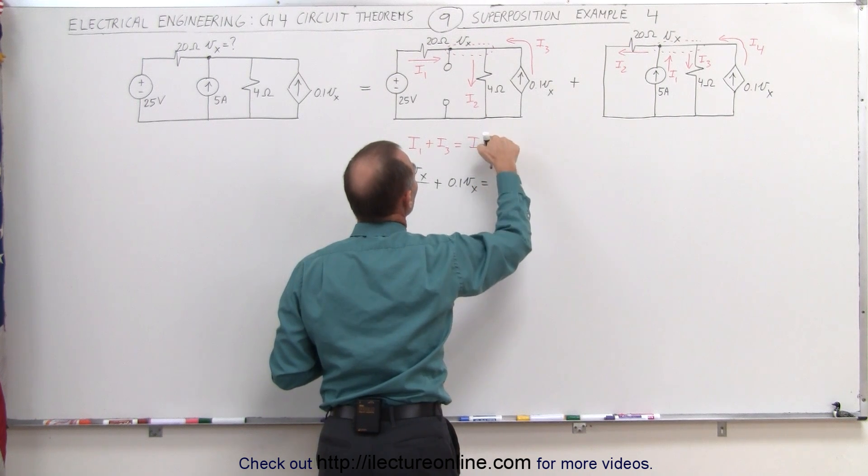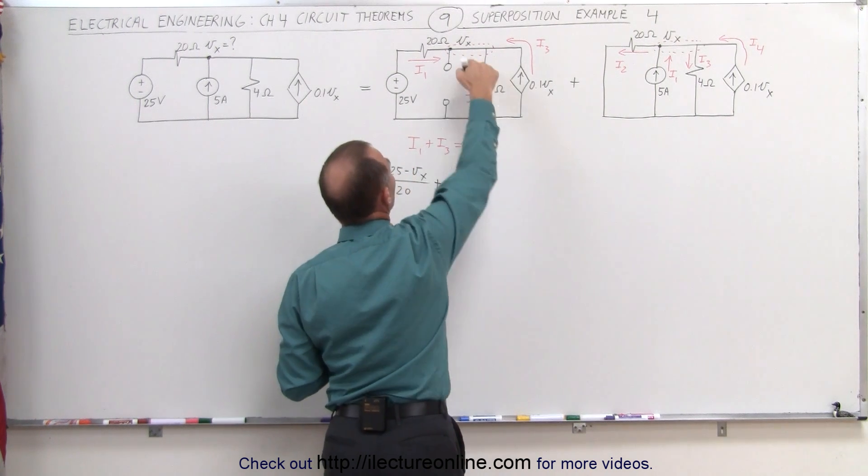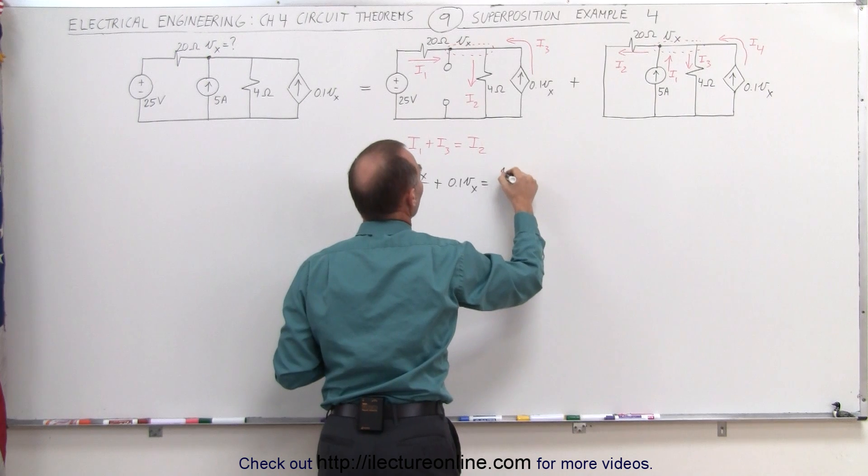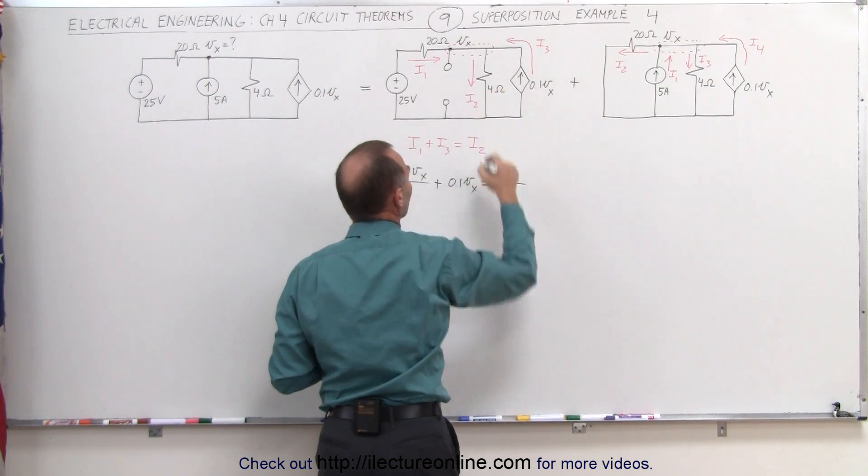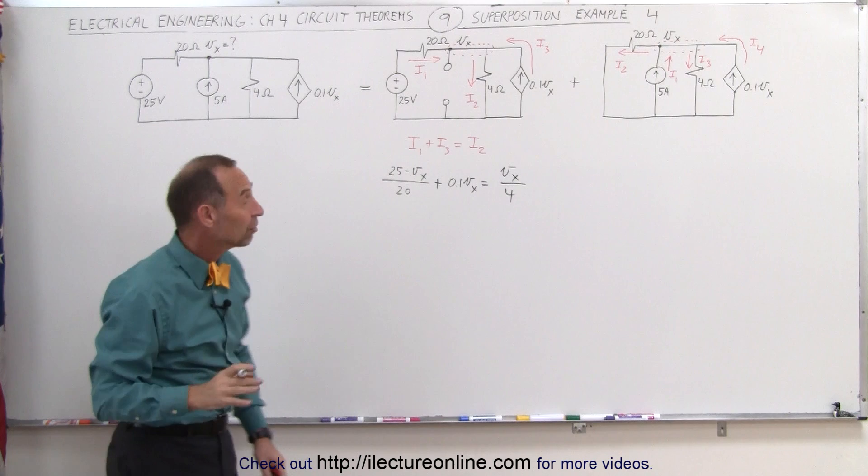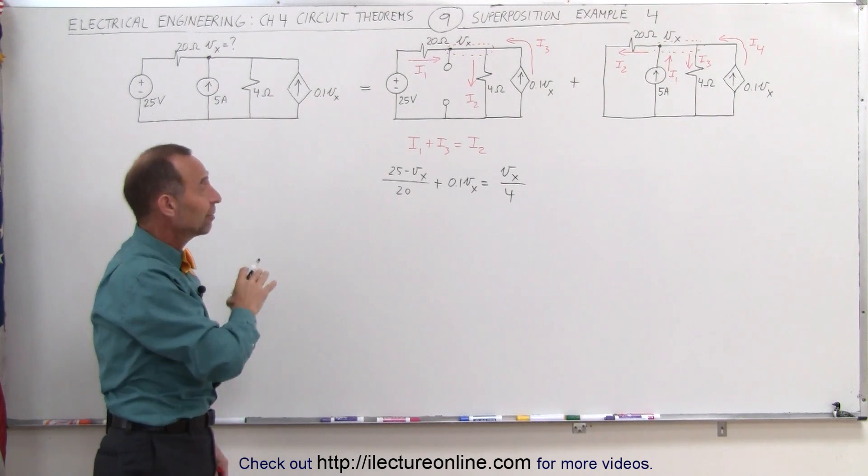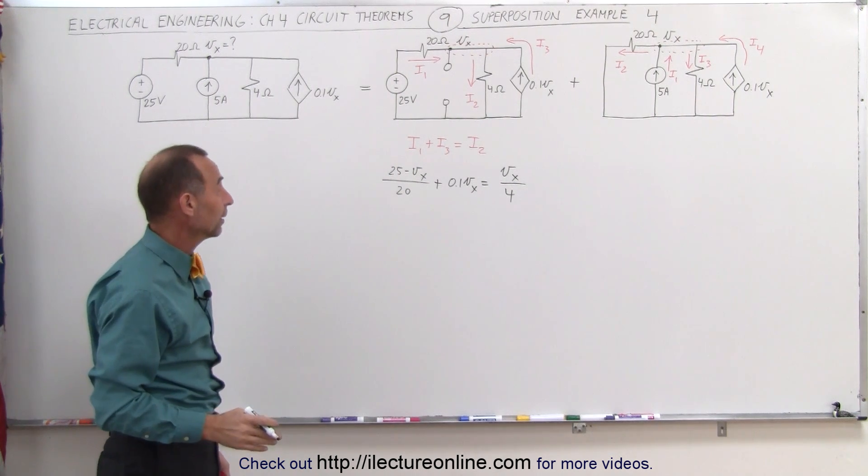And that's equal to I2. Again, that's the potential difference between here and here, which is V sub X, divided by the resistance in between four. We can go ahead and solve that equation for V sub X because that's the only unknown in there.